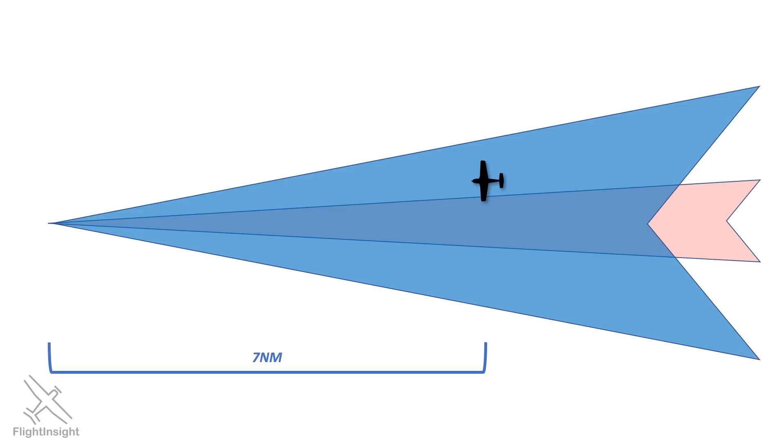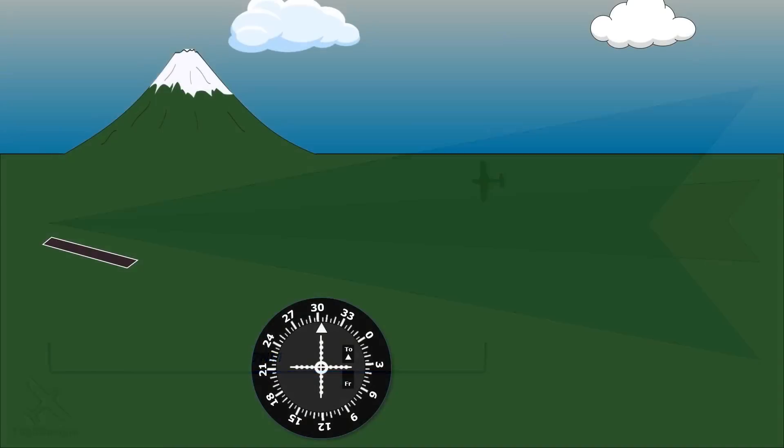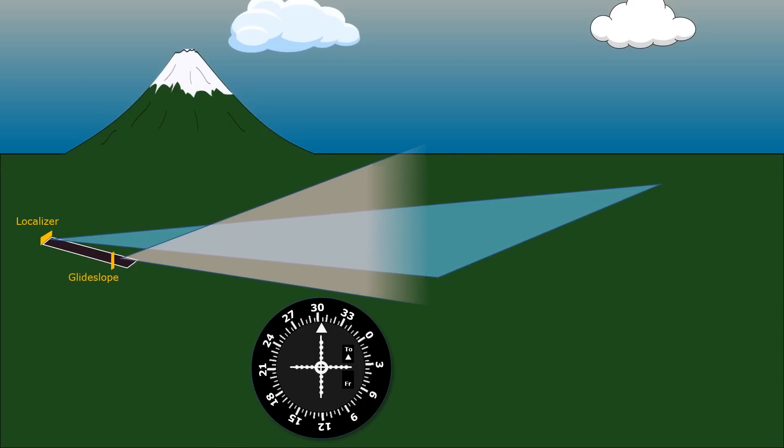So for a given distance on the approach, we can't say for certain how far a full deflection will be. The FAA makes note of this on the knowledge exams and tests your knowledge of ILS specifications accordingly. So on an ILS approach, the localizer is at the back of the runway and transmits its signal along the extended centerline. The glide slope transmits from the side near the approach end of the runway to provide vertical guidance.